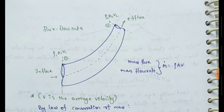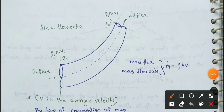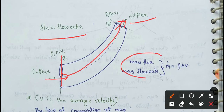Let us discuss how the continuity equation applies to a tube. For a tube with a cross-section, fluid flows through it. The fluid coming out of the outer side is called flux, which means flow rate. The mass flux or mass flow rate is: ṁ = ρAV.